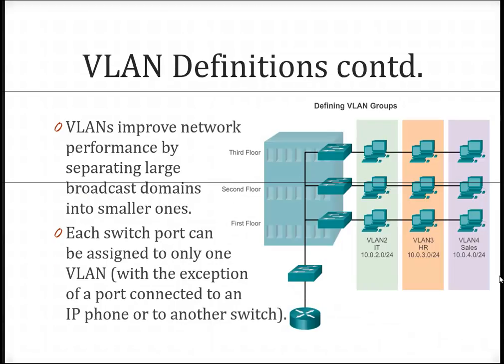In this example here, we have three different VLANs. We have VLAN number 2 which is IT, VLAN 3 which is HR, and VLAN 4 which is sales.